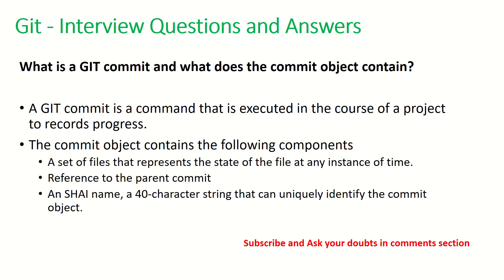The next question is: what is a git commit, and what does the commit object contain? A git commit is a command executed in the course of a project to record progress. Whenever we write git commit we are adding or pushing our changes to the local repo, or when pushed to a branch it becomes committed into that branch. The commit object contains three things: all the files that have been modified, a reference to the parent commit, and a SHA name — a 40-character string used to uniquely identify a particular commit.